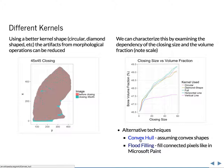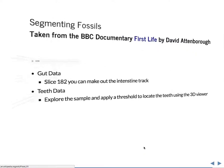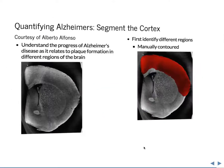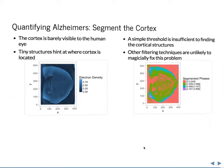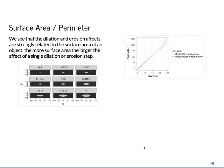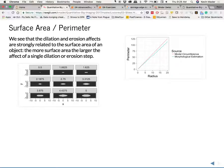There are alternative techniques: convex hull, where you assume you have a convex shape, and flood filling, where you connect all the pixels that are connected together. For those who use Microsoft Paint, the Paint Bucket tool fills in the whole region that's connected together. We also had this with segmenting fossils, surface area perimeter, and that was really it for those slides as a quick review of what we were doing before.